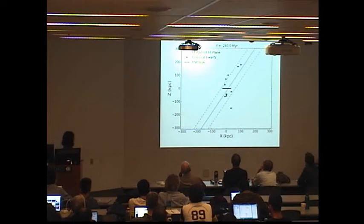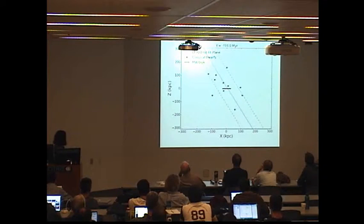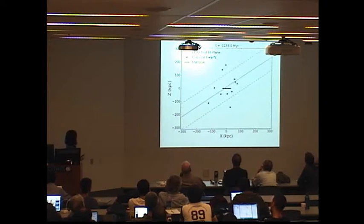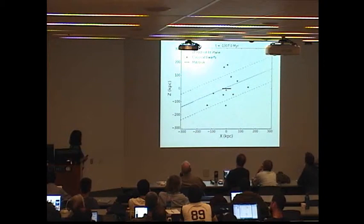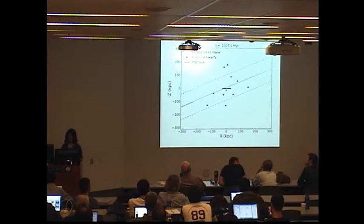And the same thing happens when you exclude LEO-1 and 2 and you integrate backwards. So this movie shows the orbits as a function of time, and you see that the structure is clearly not dynamically coherent.